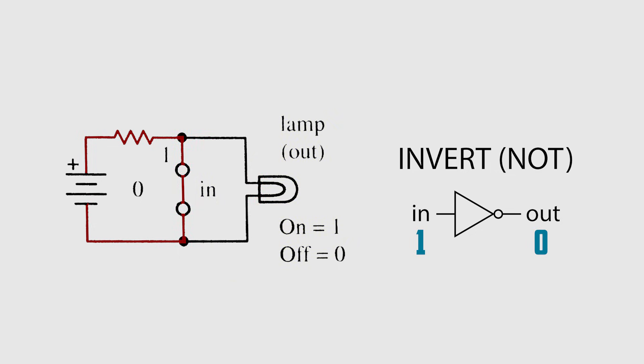Input high, the light is off, the output is low. Input low, the light is on, the output is high. While NOT gates have only one input and one output, the rest of the gates we'll discuss today need at least two inputs and one output.